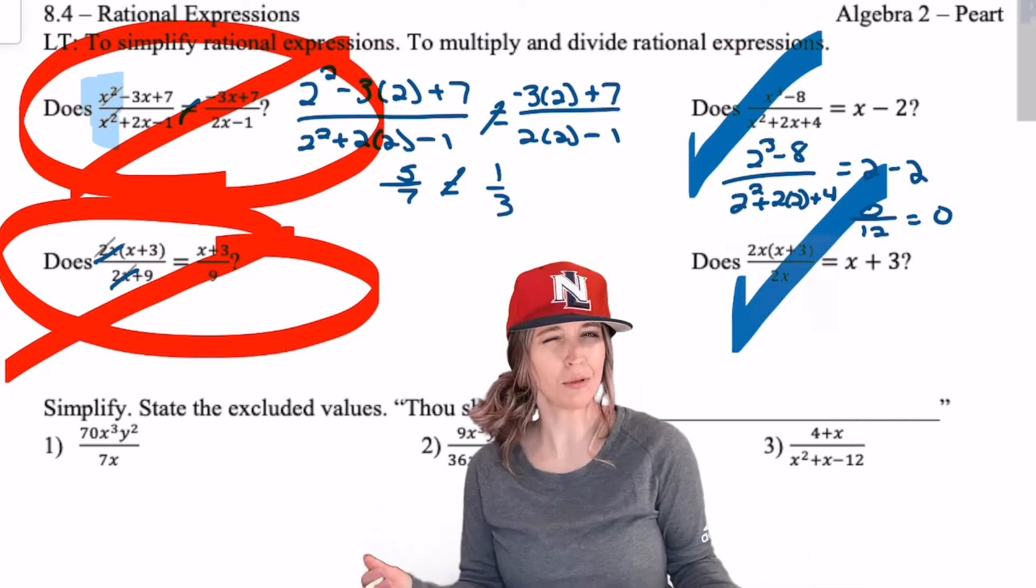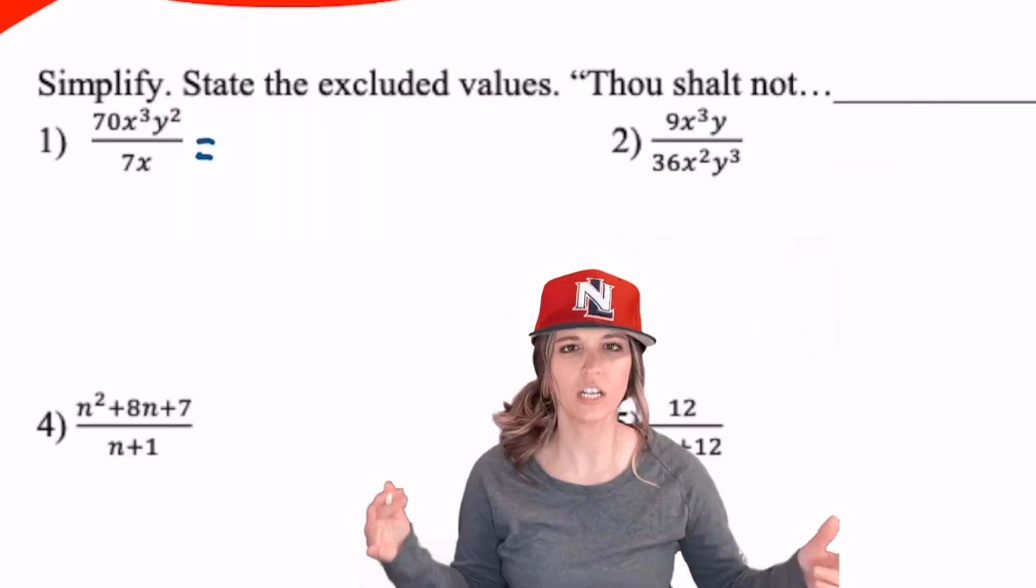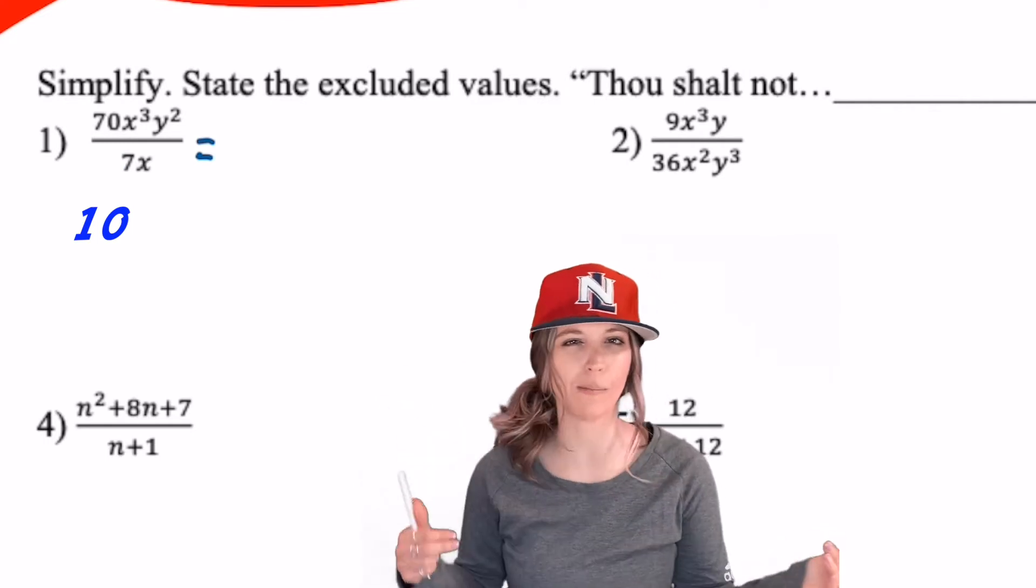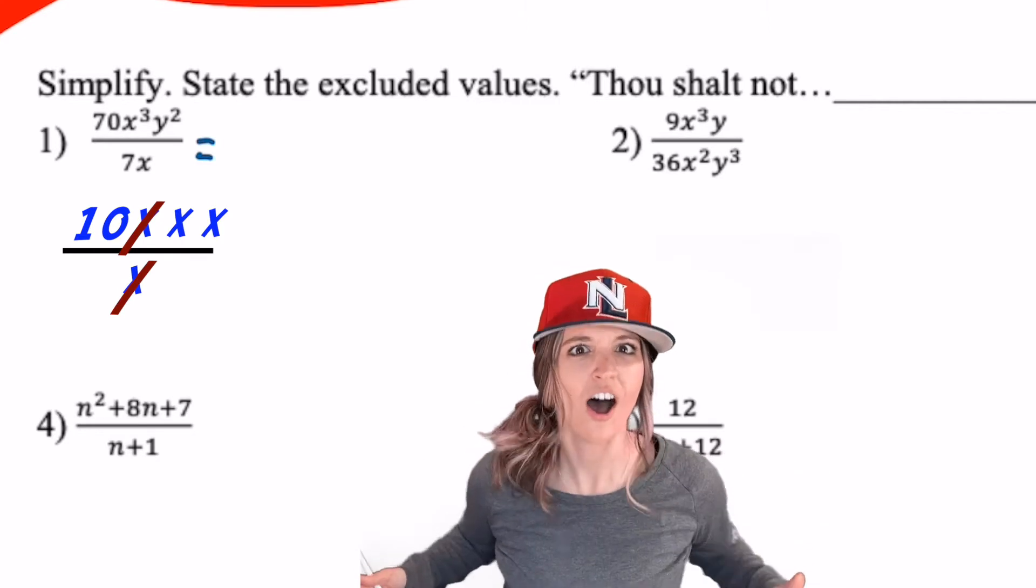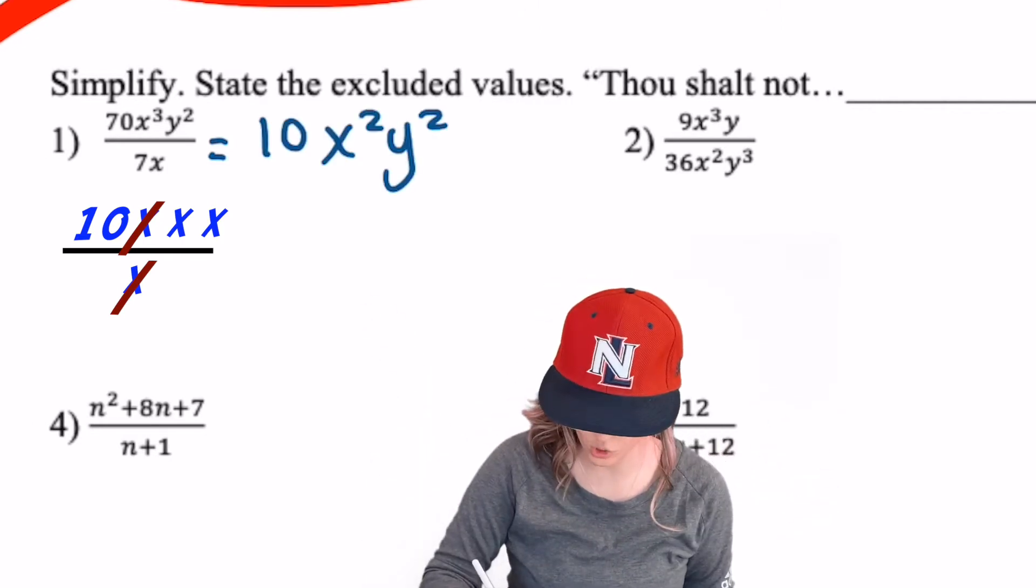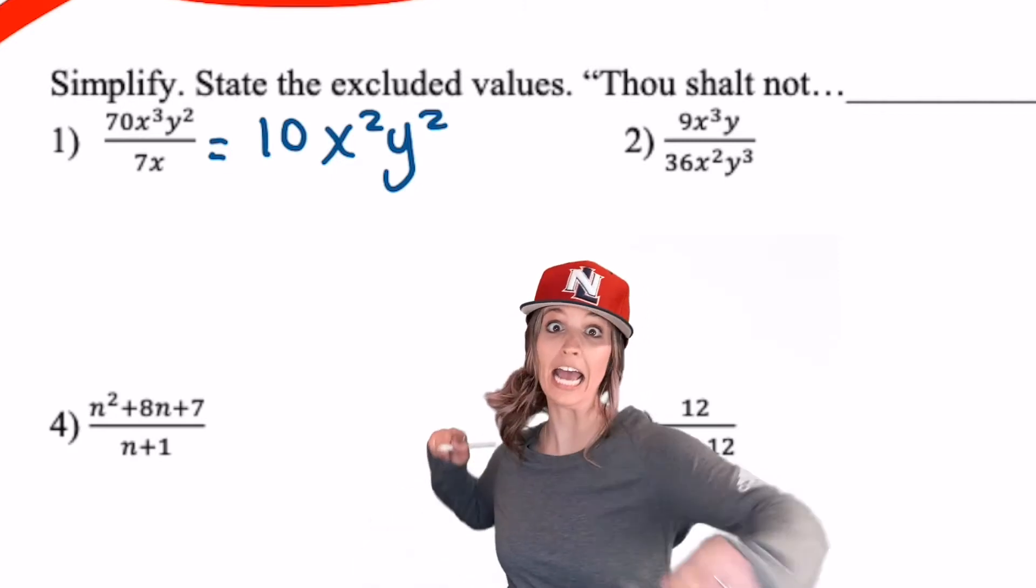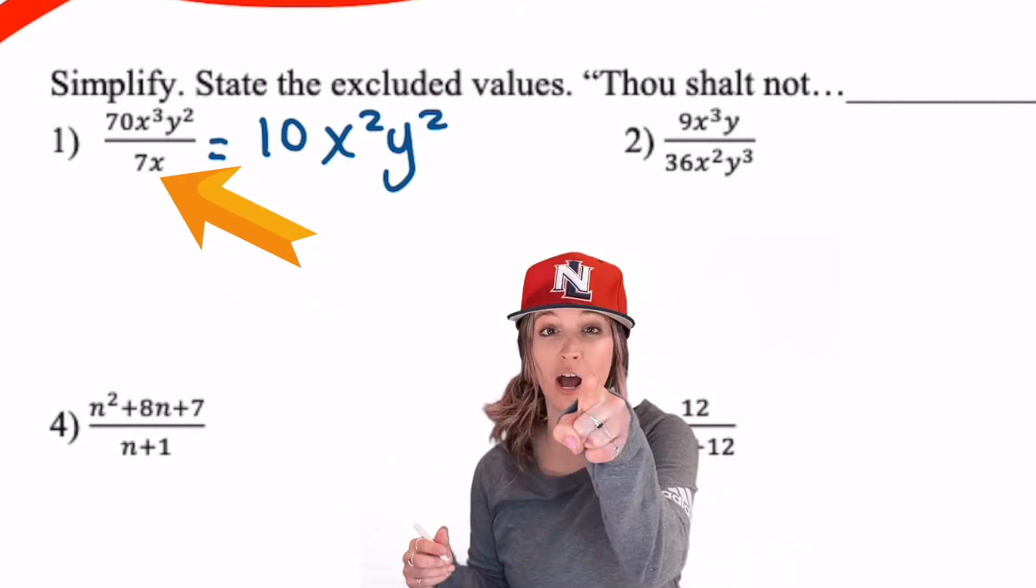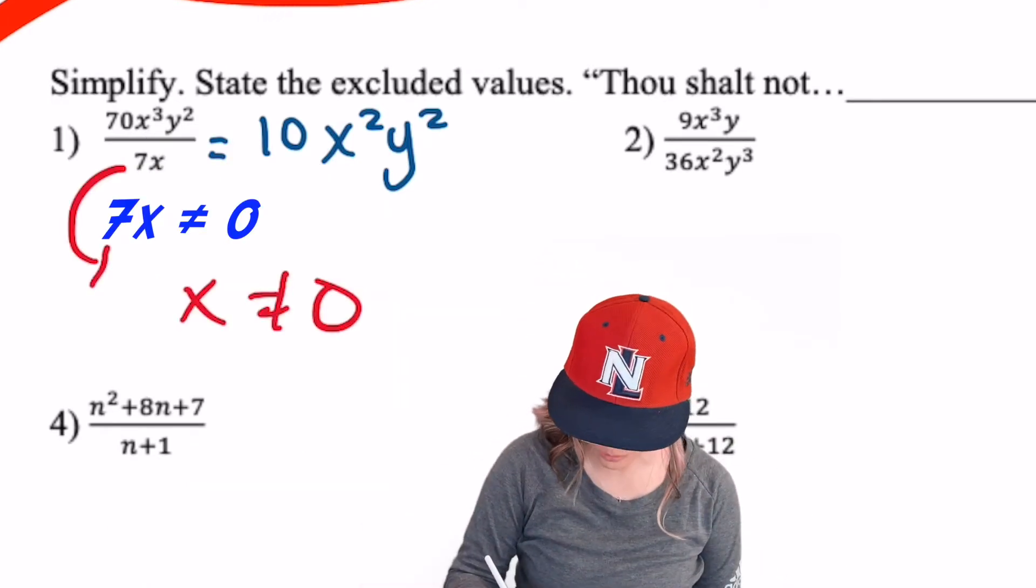Now that we have these rules we can simplify rational expressions. Look at this first one. This just seems like a review of exponent rules. We got 70 divided by 7, well we know that's just 10. Then we've got x cubed divided by x. Well how many x's on top? 3! How many x's on bottom? 1! How many divide out? 1! So we have x squared left on top. There's no other y's so we're just gonna have y squared. We get 10x squared y squared. Are these equivalent expressions? Yes! Except we're dividing by 7x. There's an x in the denominator. Thou shall not divide by 0! So x cannot equal 0!